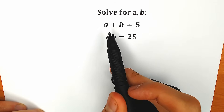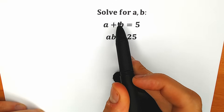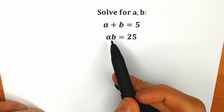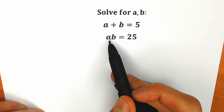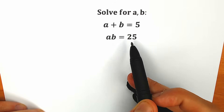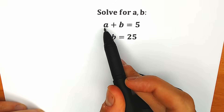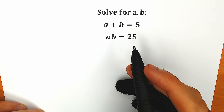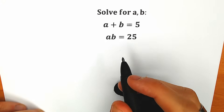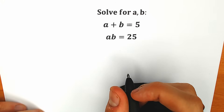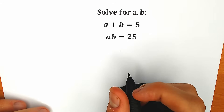Today we have a very interesting question. We know that the sum a plus b equals 5, and we know that the product a times b equals 25, and we need to find a and b. So if you have your answer, your solution, you can write it in the comments below, and then we will check your answers.